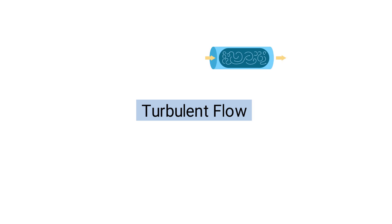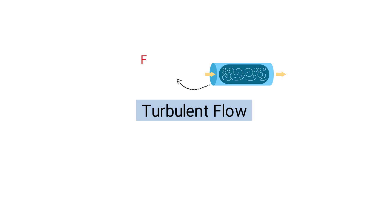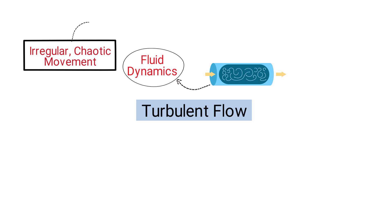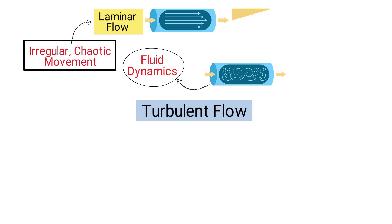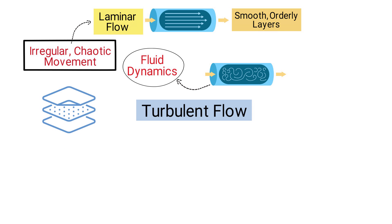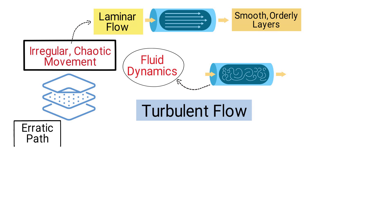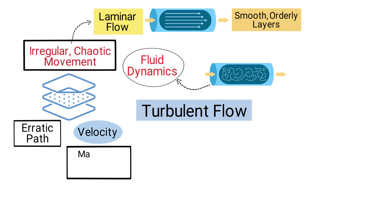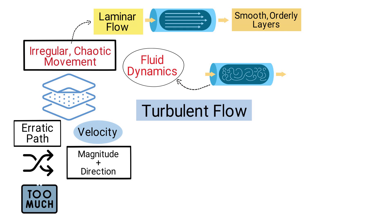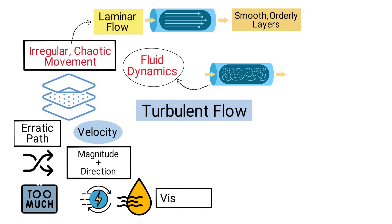Turbulent flow is a complex fluid dynamic phenomenon characterized by irregular, chaotic movement, contrasting with laminar flow where the fluid moves in smooth, orderly layers. In turbulent flow, fluid particles follow an erratic path and their velocity at a point varies continuously in both magnitude and direction. This randomness is caused by excessive kinetic energy in parts of the fluid that overcomes the damping effect of the fluid's viscosity.